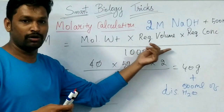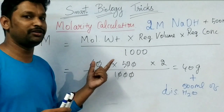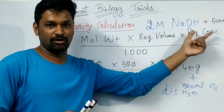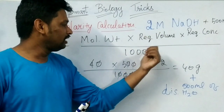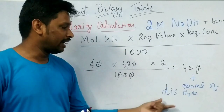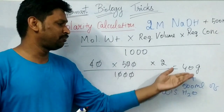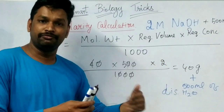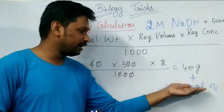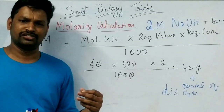Molecular weight of the chemical multiplied by required volume multiplied by required concentration — every chemical has a specific molecular weight. You need that molecular weight, the required volume, and the required concentration. Divide by 1000, simplify, and you get the value — that much amount of chemical you measure and dissolve with 500 ml of water. I hope you have understood.